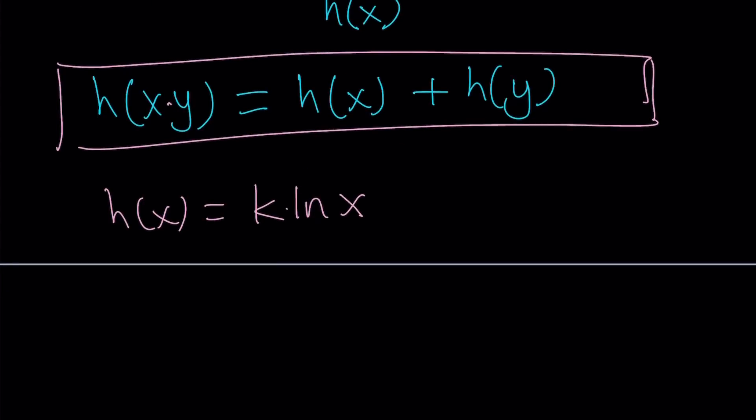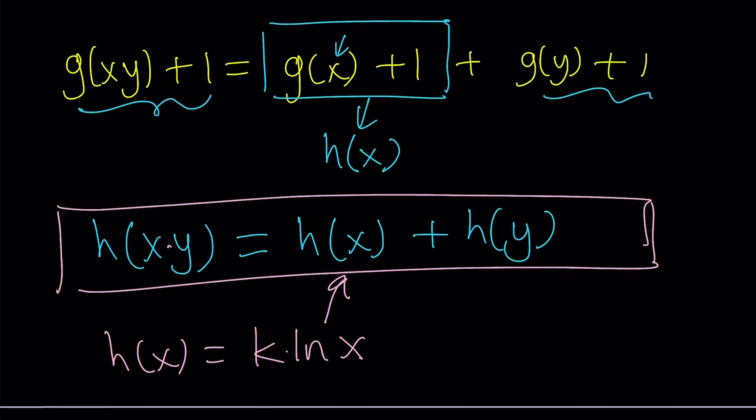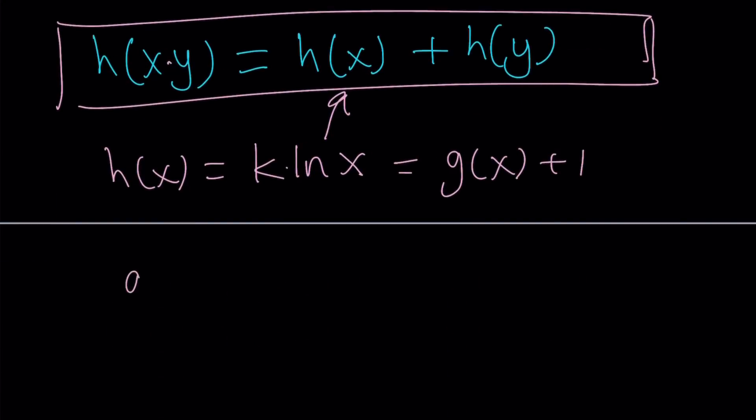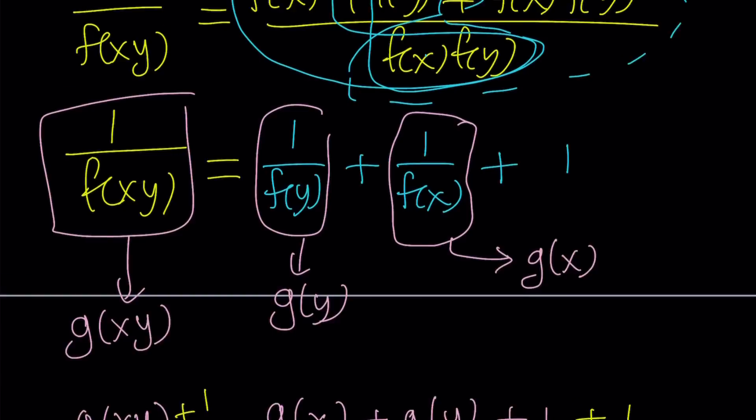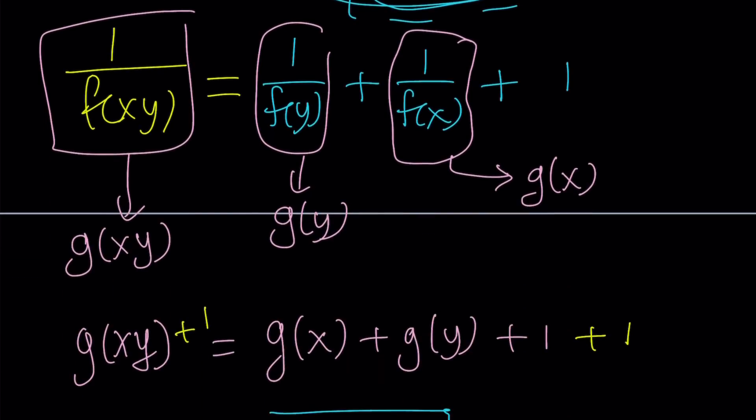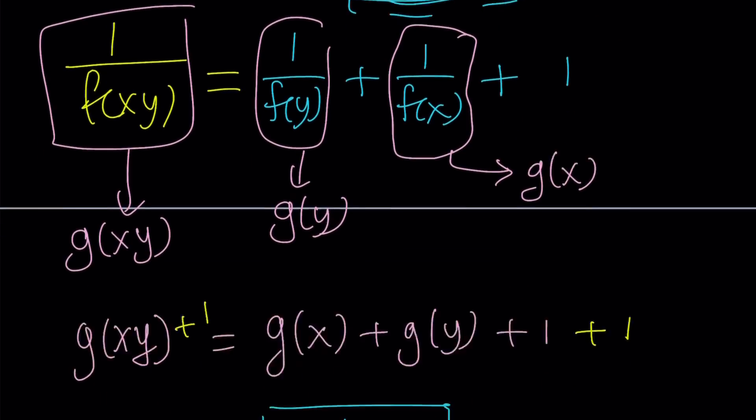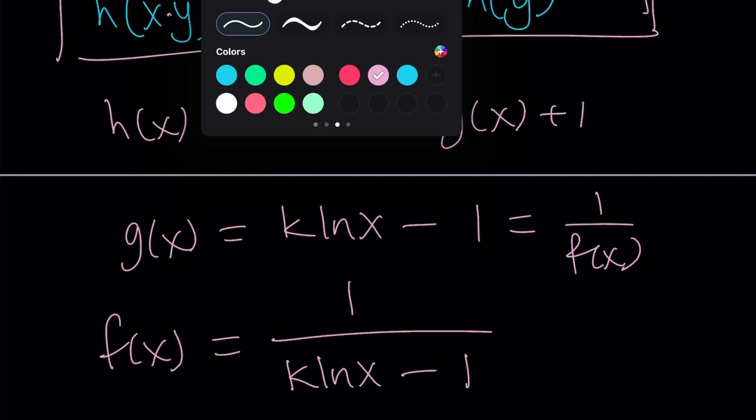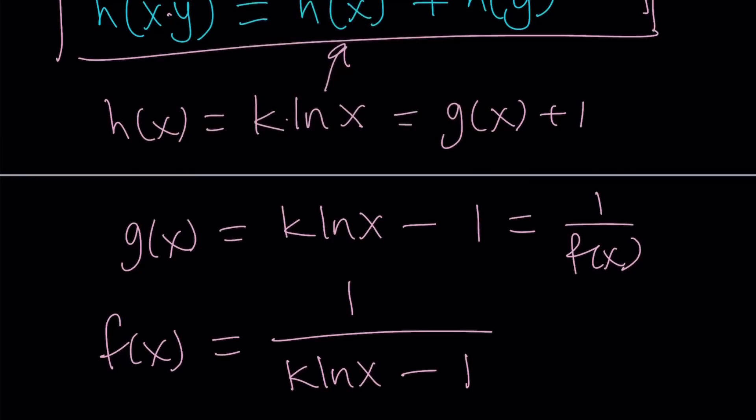So now this satisfies, and you can definitely check that. So let's go ahead and go back. h of x is equal to what? g of x plus 1. Hmm, that's interesting. So from here we find g of x. By subtracting 1 from both sides, we get k ln x minus 1. But that's g of x. I don't want g of x. I want f of x. What is f of x? f of x is 1 over f of x is g of x. Okay. So 1 over f of x is g of x. Therefore f of x is 1 over g of x. f of x from here is going to be 1 over k ln x minus 1. So this is the type of function that is going to satisfy the original equation that I gave you.